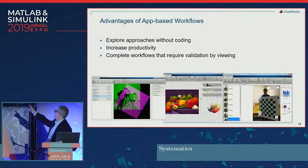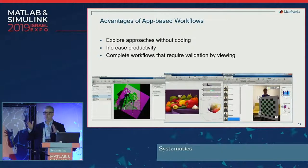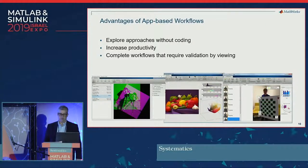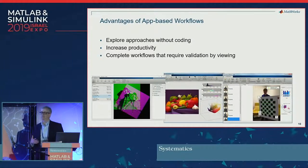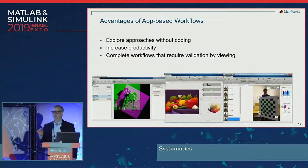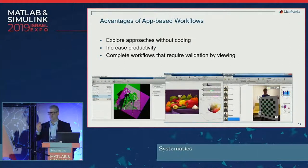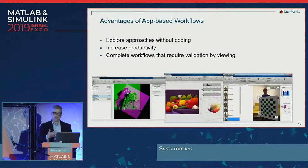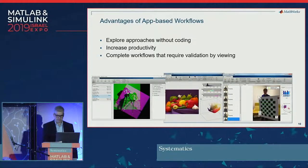You don't need a giant checkerboard. You could use a smaller one. You use this checkerboard image, which we provide in the toolbox — you would print it, and then use it to calibrate your camera by taking about 20 to 40 pictures. These apps also help with workflows that require some validation. You might use the Image Batch Processor, run it through a bunch of images, and spot check to make sure your algorithm is working as you explore whether it's performing correctly.